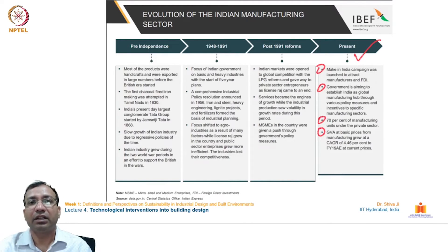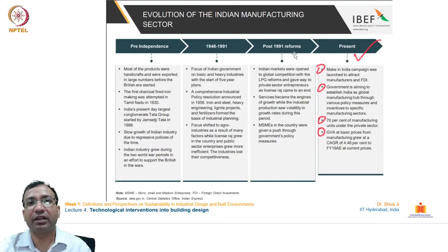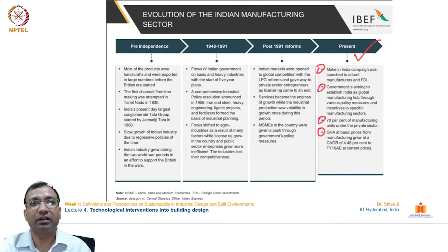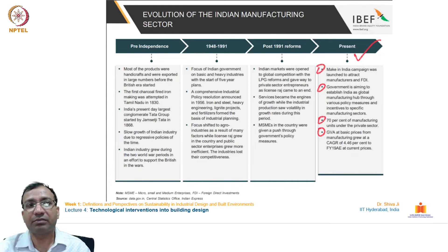If we look at how the evolution of the Indian manufacturing sector has progressed over different times, this period is divided into four segments. The first being the pre-independence era, when most products were handicraft-based or majorly exported in large numbers before the British era started.